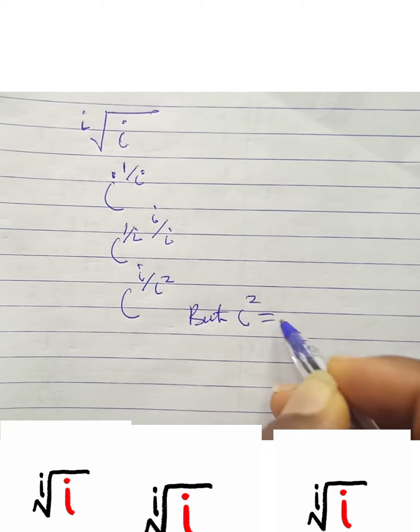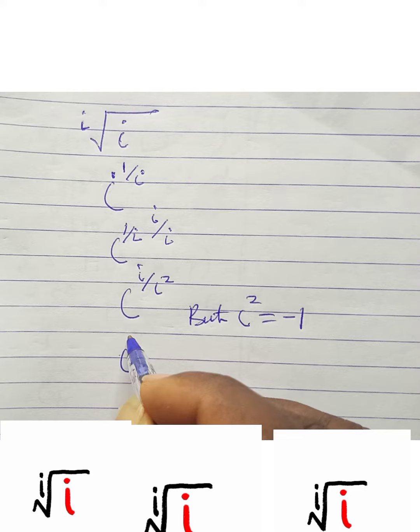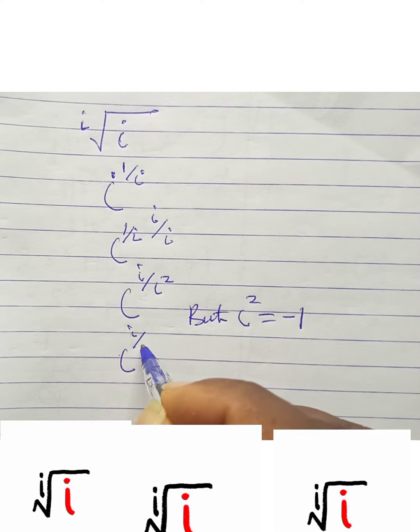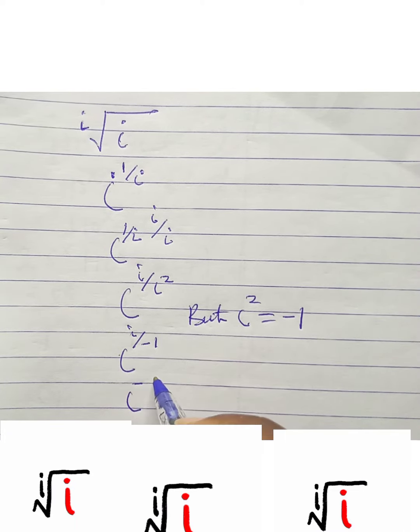But i squared is equal to minus 1. So what are we going to have here? We're going to have i raised to i divided by minus 1, which is i into minus i.